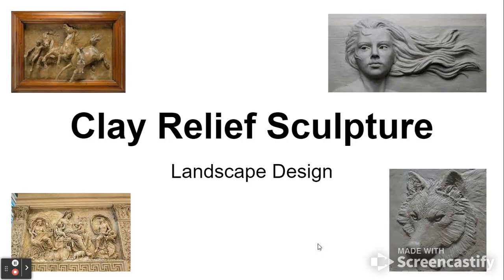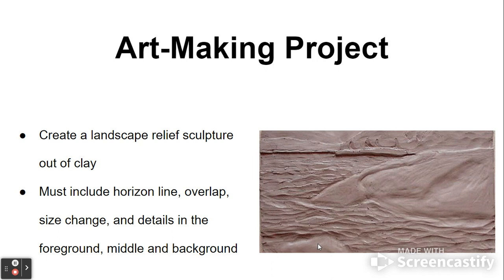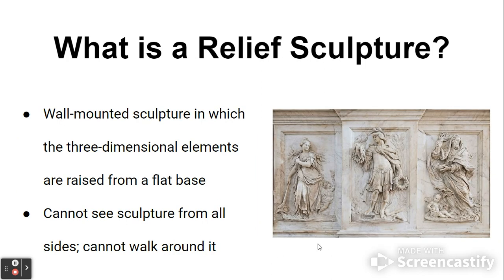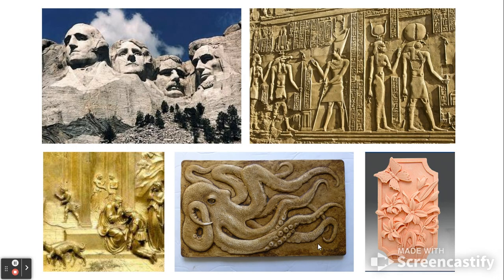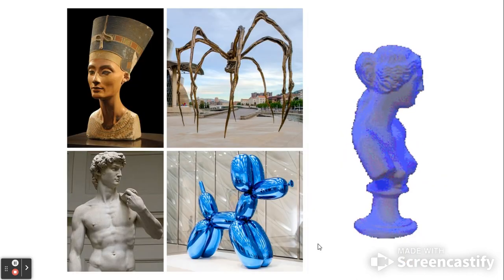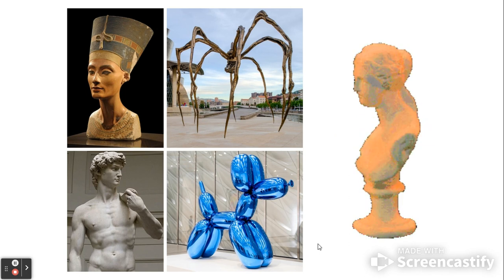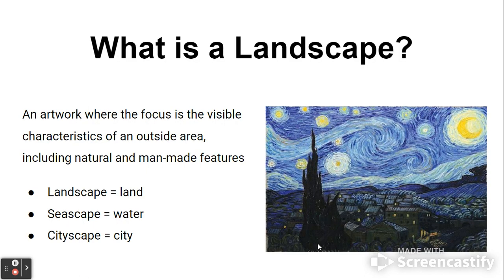So again, our product is a relief sculpture. We talked about the project which is to create a sculpture that includes a horizon line, overlap, size change, and details in the foreground, middle ground, and background. And we talked about a relief sculpture as a sculpture that you essentially cannot walk all the way around that emerges from a wall or a flat surface. Here are some different examples of relief sculptures. These are some non-examples of relief sculptures. All these are sculptures in the round or three-dimensional.